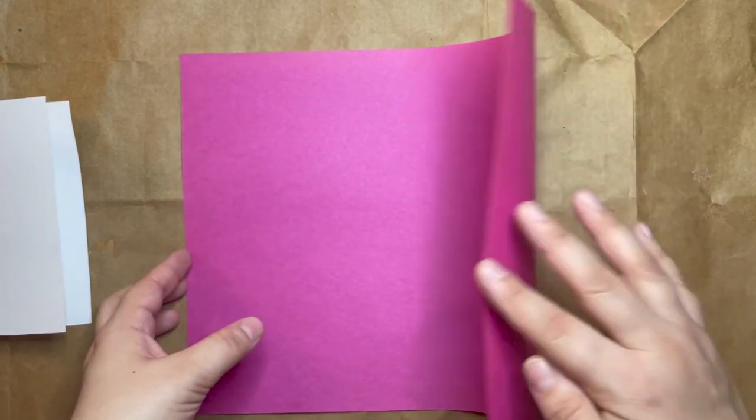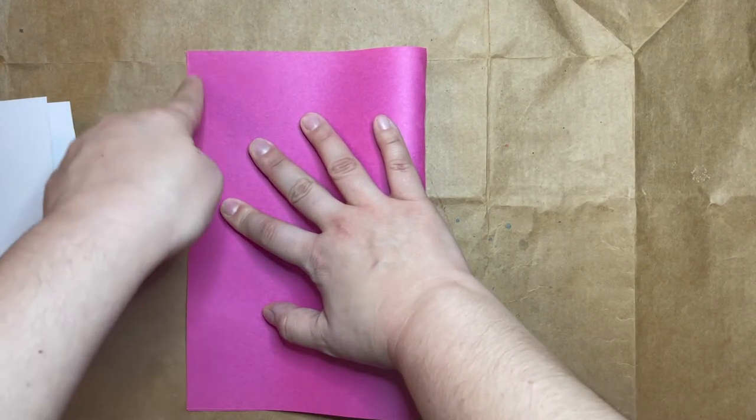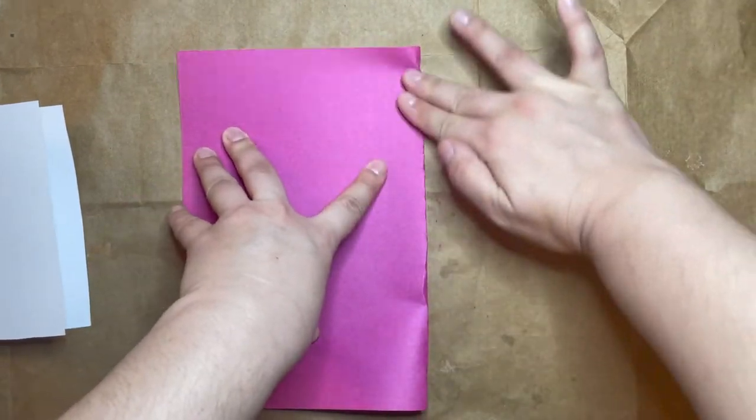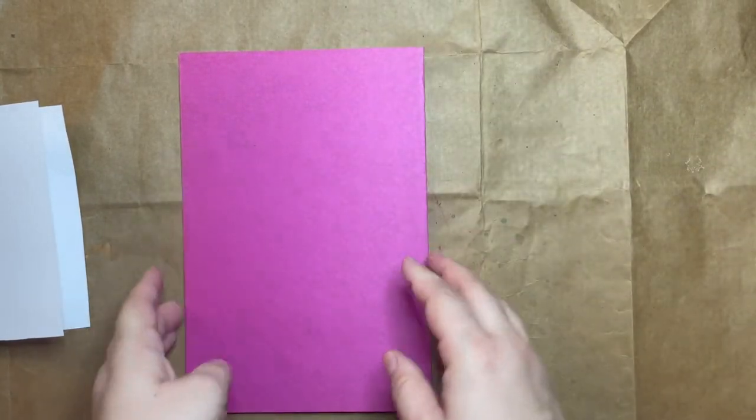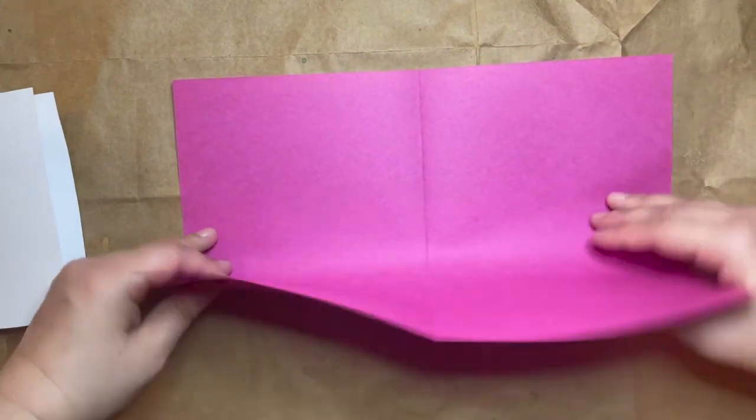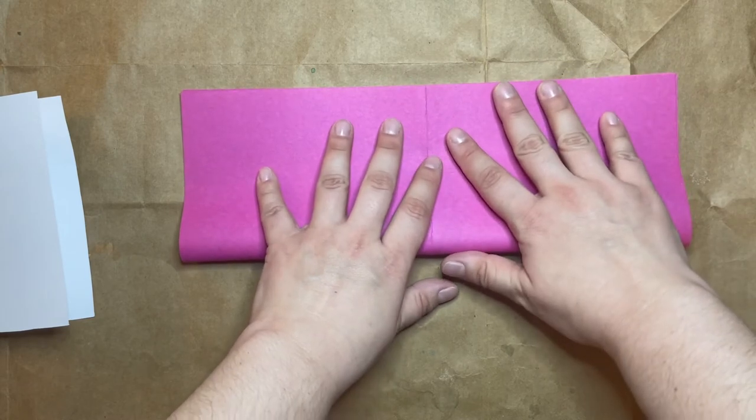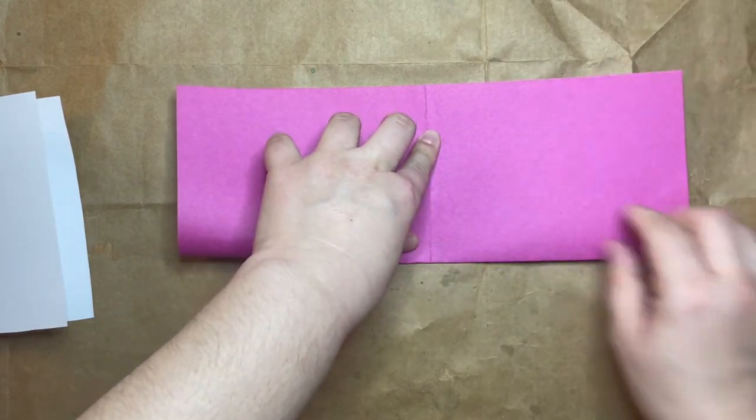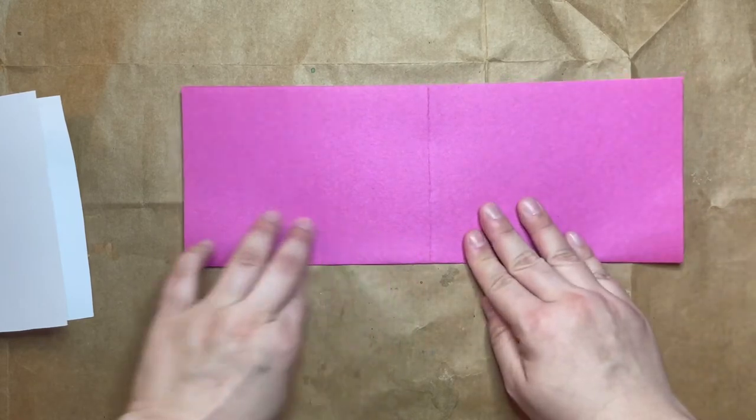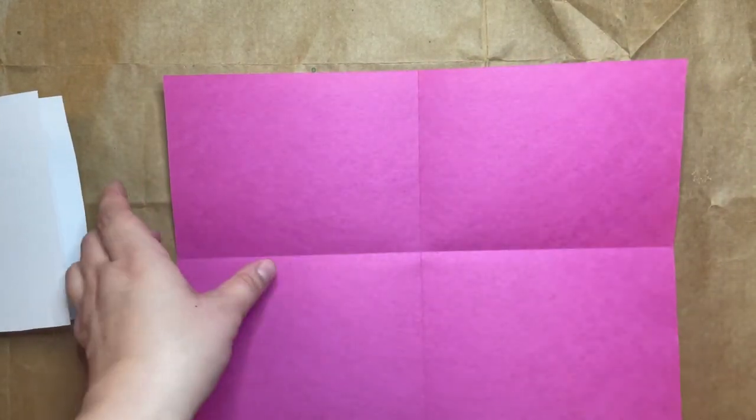So I'm going to do first a hamburger fold—corner to corner, short edge to short edge, fold, then open. Then I'm going to do a hot dog fold—corner to corner, long edge to long edge, fold. And then I'm going to take my scissors and cut along these lines so that I have four pieces of paper that are the same size.